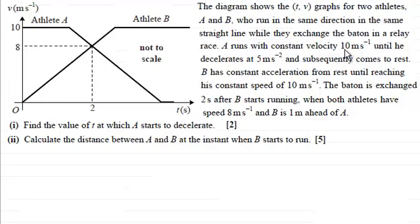who run in the same direction in the same straight line while they exchange the baton in a relay race. A runs with constant velocity of 10 meters per second until he decelerates at 5 meters per second squared and subsequently comes to rest.